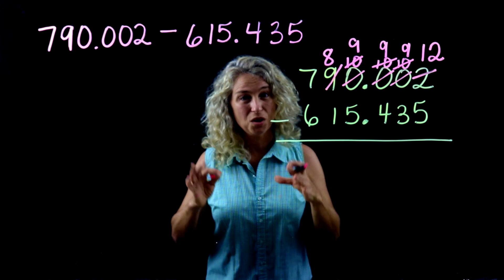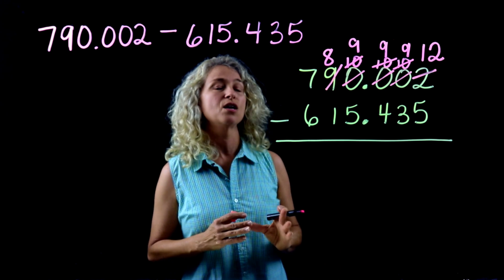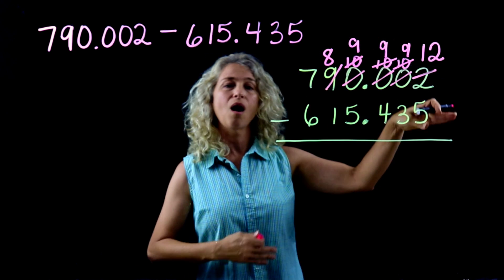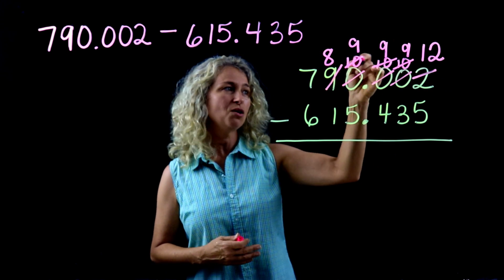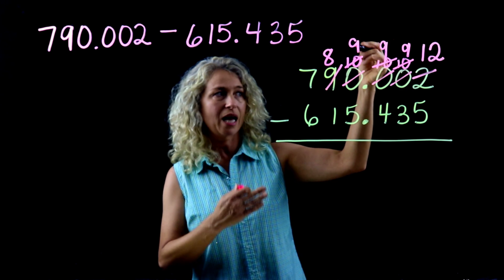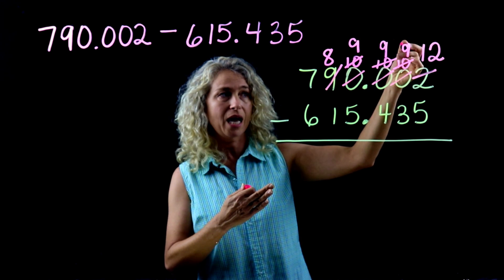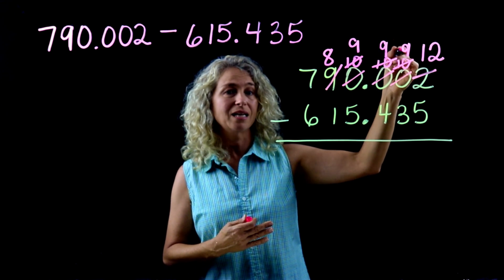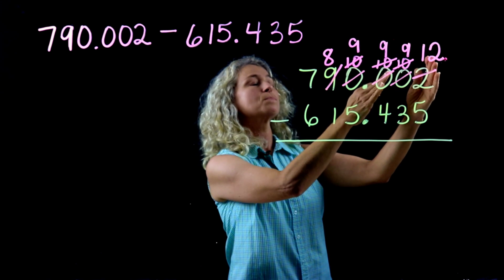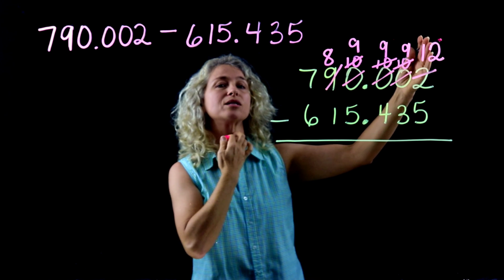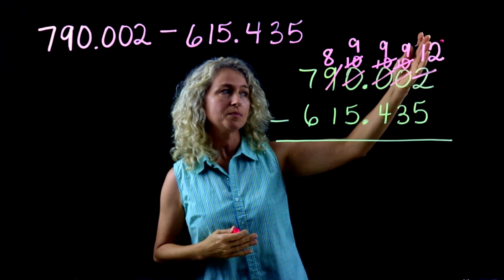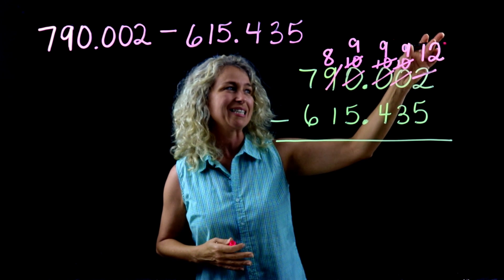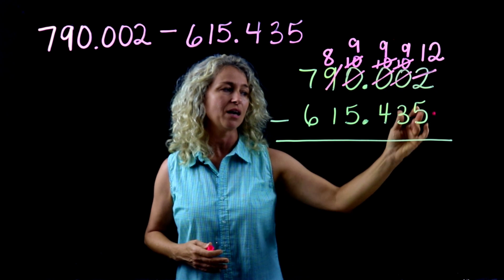When you get good at this, you'll realize that when you borrow across zeros you don't have to do each step one at a time. You can just know that each zero becomes a nine, and the position where you finally stop gets ten added to it.